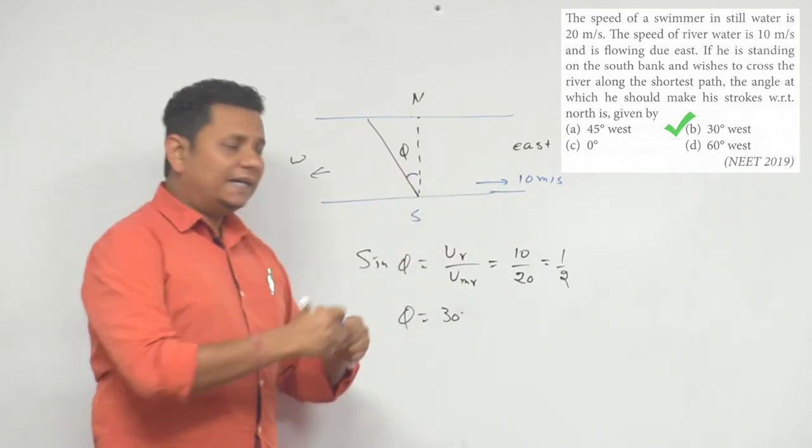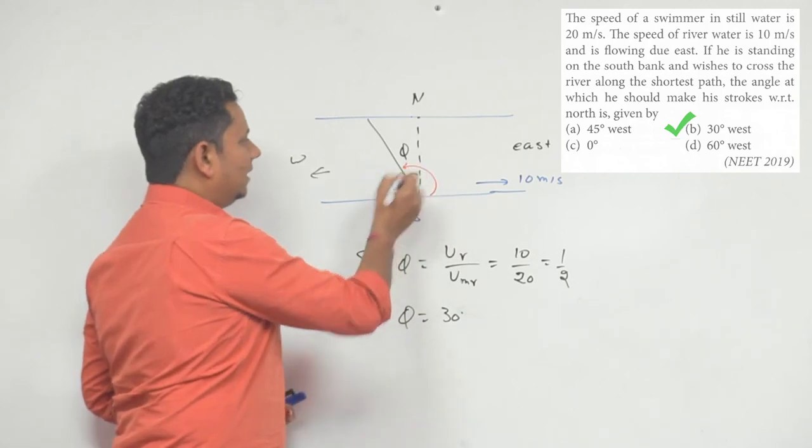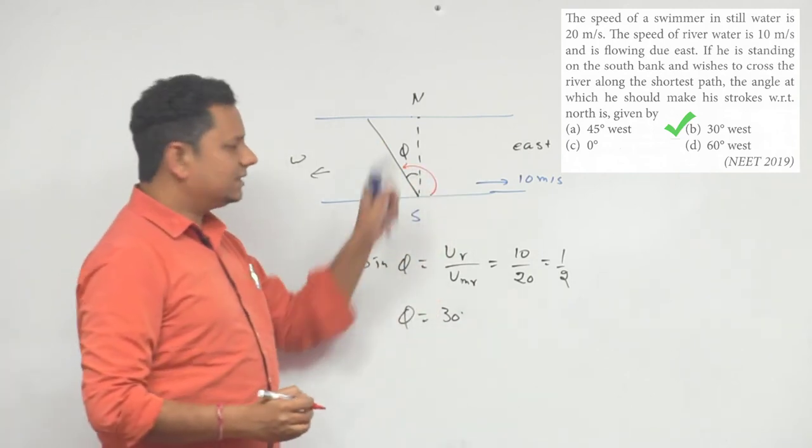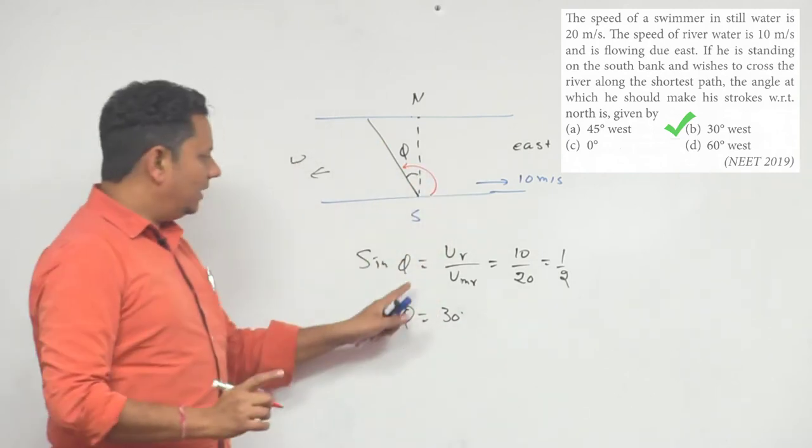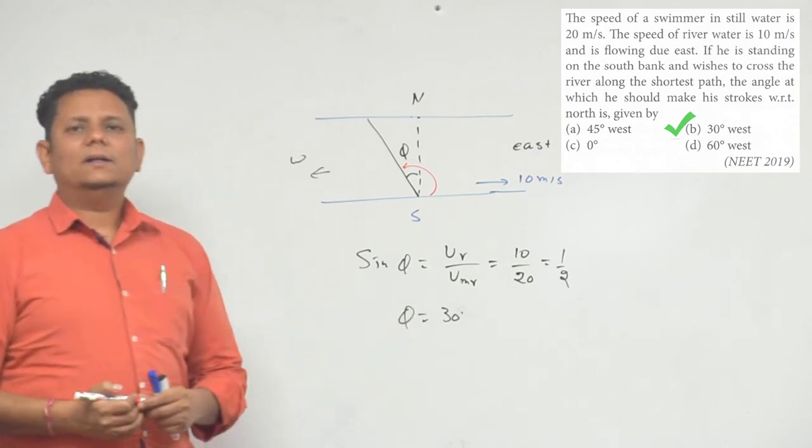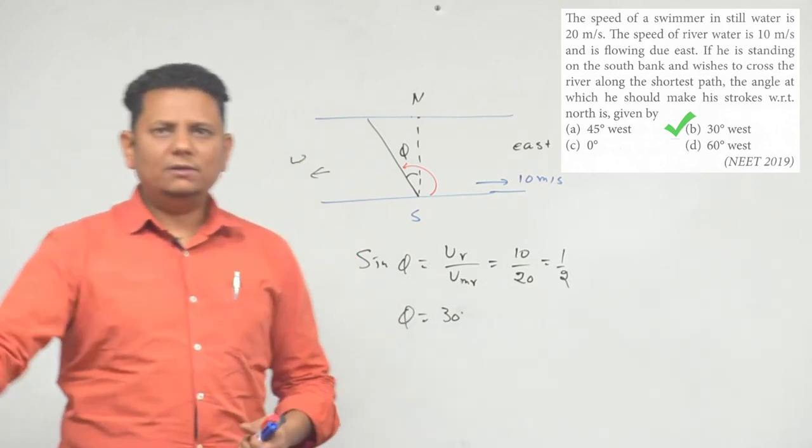Now if this angle is 30 degrees, the angle from the river bank will be from here to here, 120 degrees, all right, so 90 plus 30 degrees. So it's easier to calculate this way. This will be the correct answer. Option number B will be the right choice.